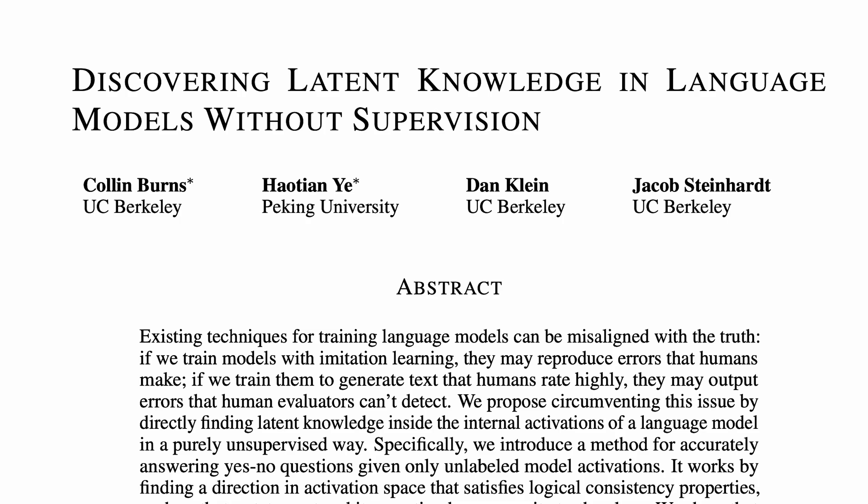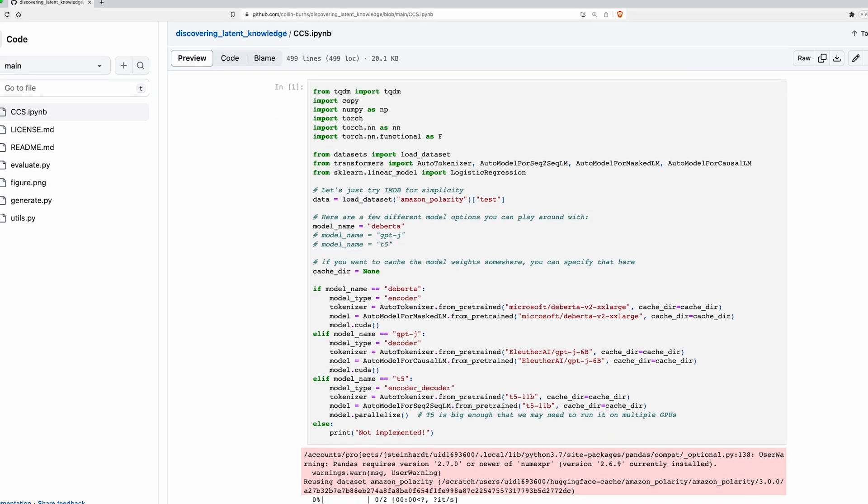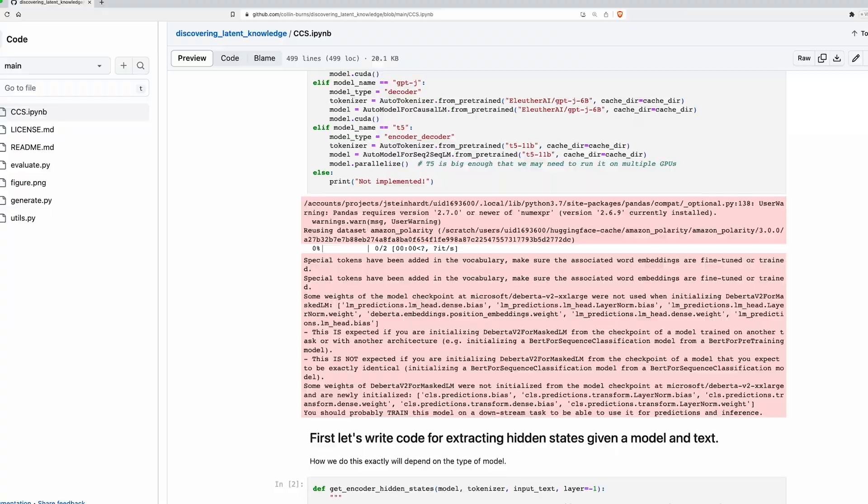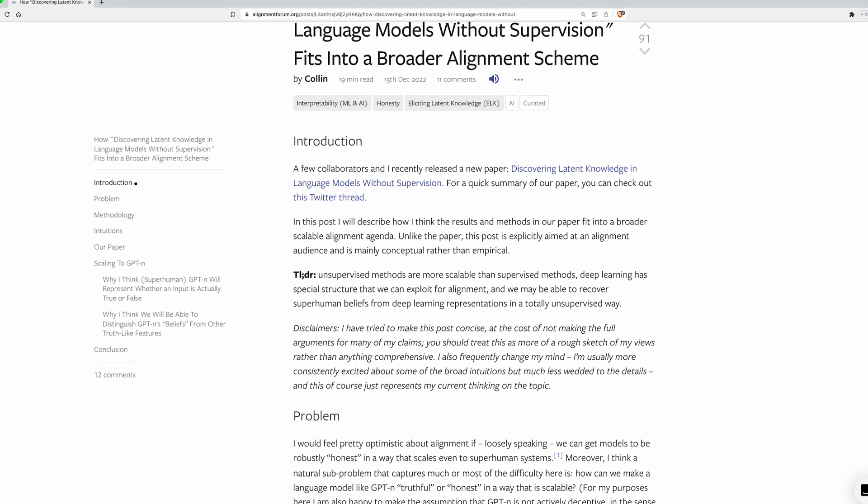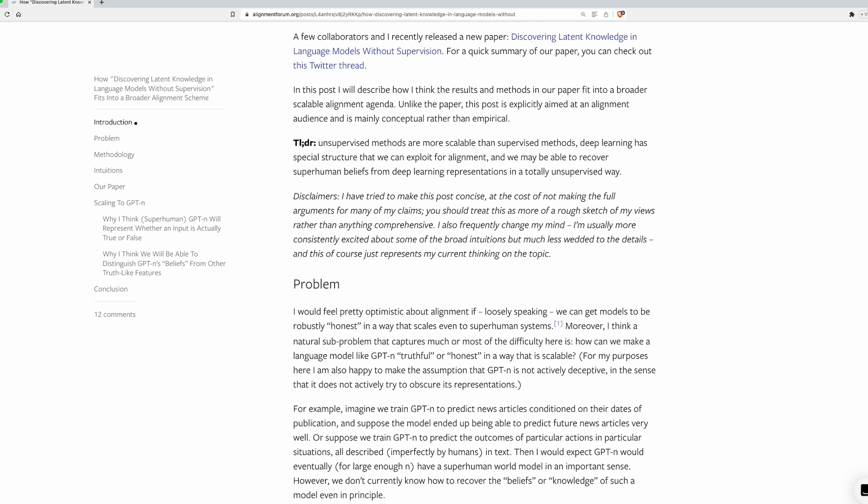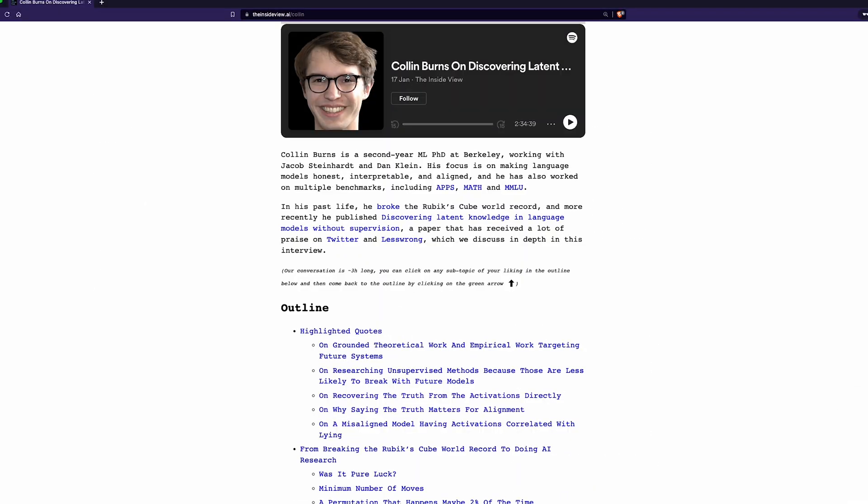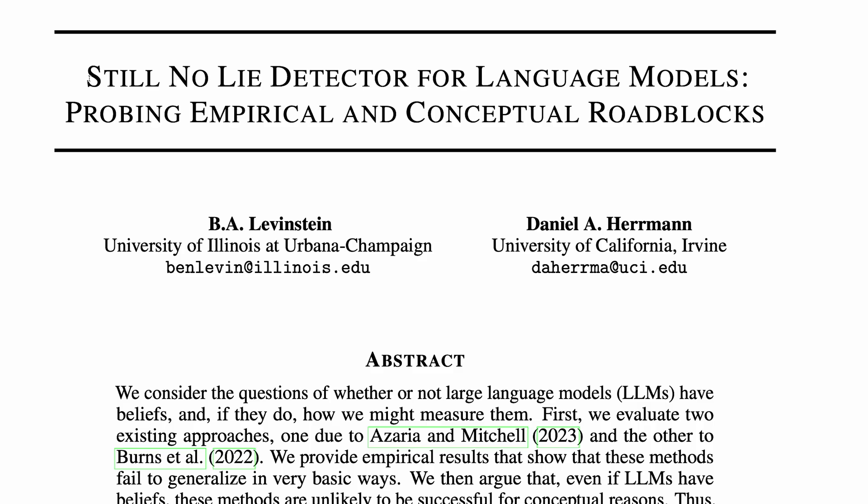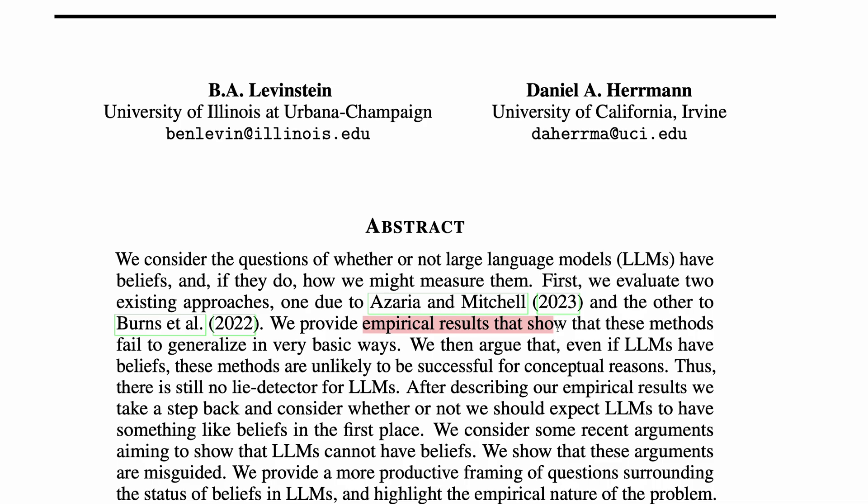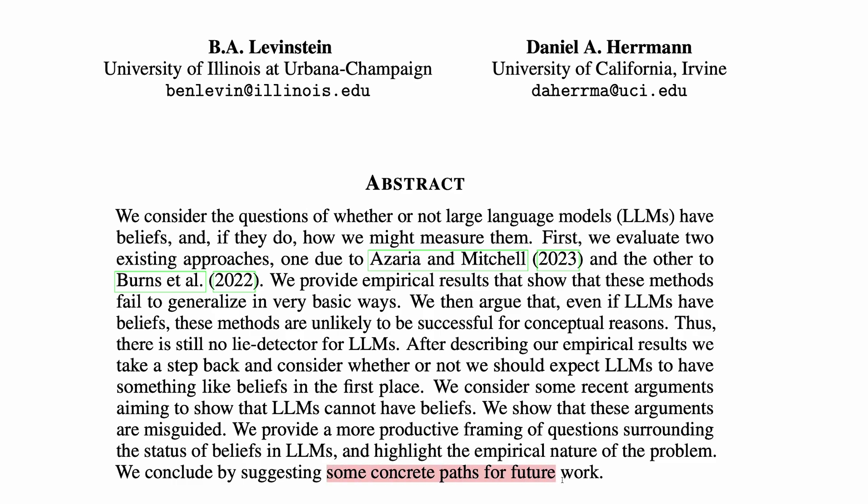If you'd like to find out more about this paper, I recommend four further resources. There's a notebook that walks through how CCS can be run on simple examples. Second, a forum post that I'll link to in the comments explains how Colin views this work as fitting into a broader AI alignment agenda, and explains what, in his view, the research does and doesn't demonstrate. Third, I recommend an interview with Colin on the InsideView podcast, which explains the motivation behind the work, and also how he came to hold a Rubik's Cube world record. Finally, I recommend a recent critique of this work called Still No Lie Detector for Language Models, probing empirical and conceptual roadblocks, which provides empirical results that show that methods such as CCS fail to generalize in very basic ways, and suggest some concrete paths for future work.